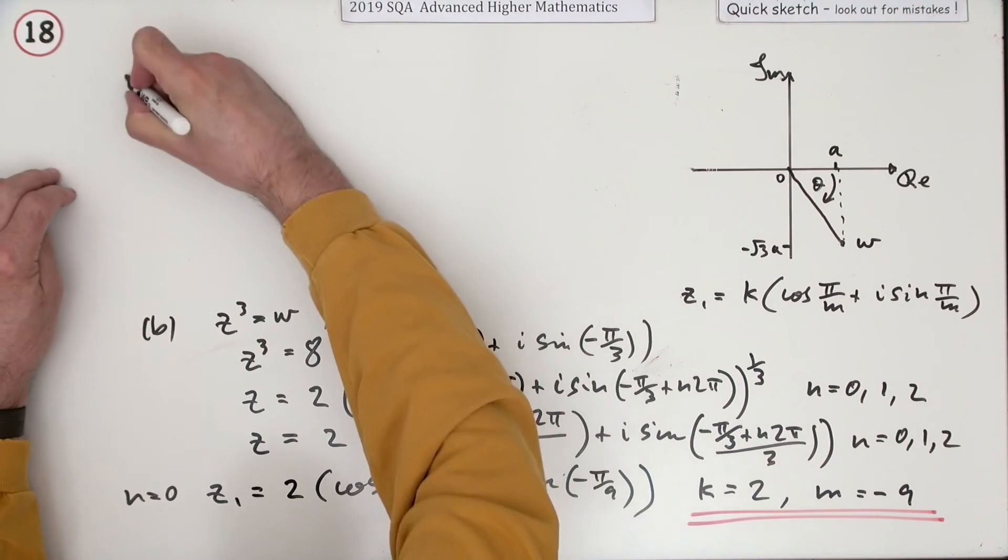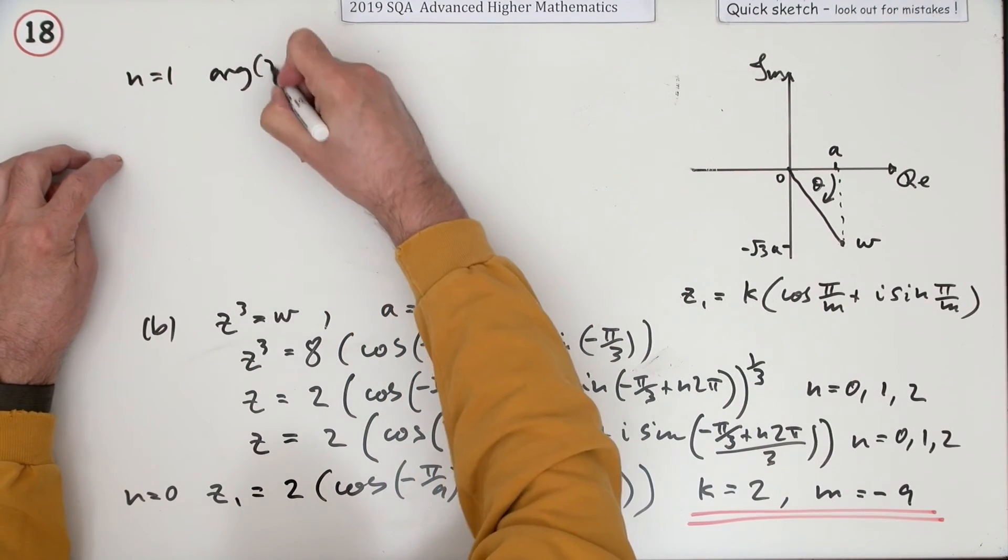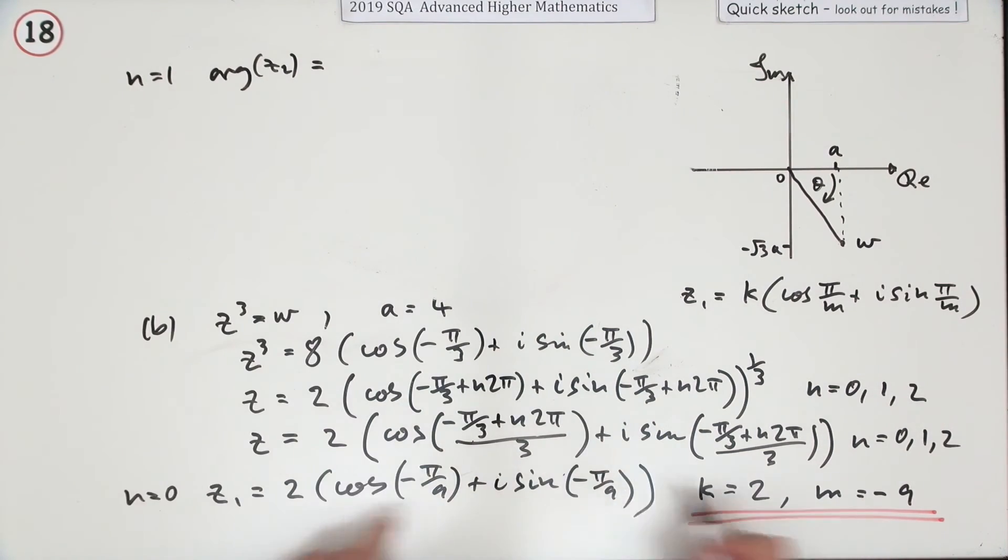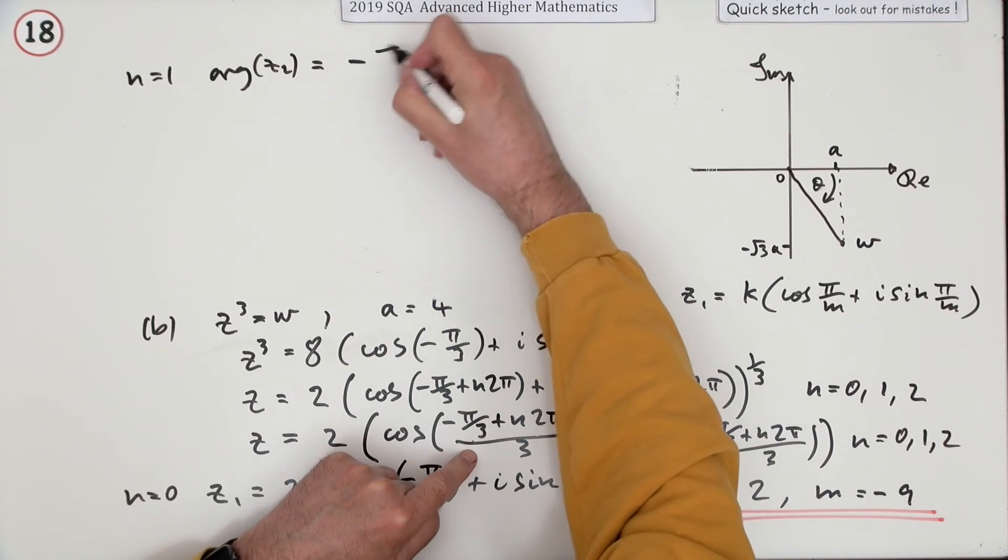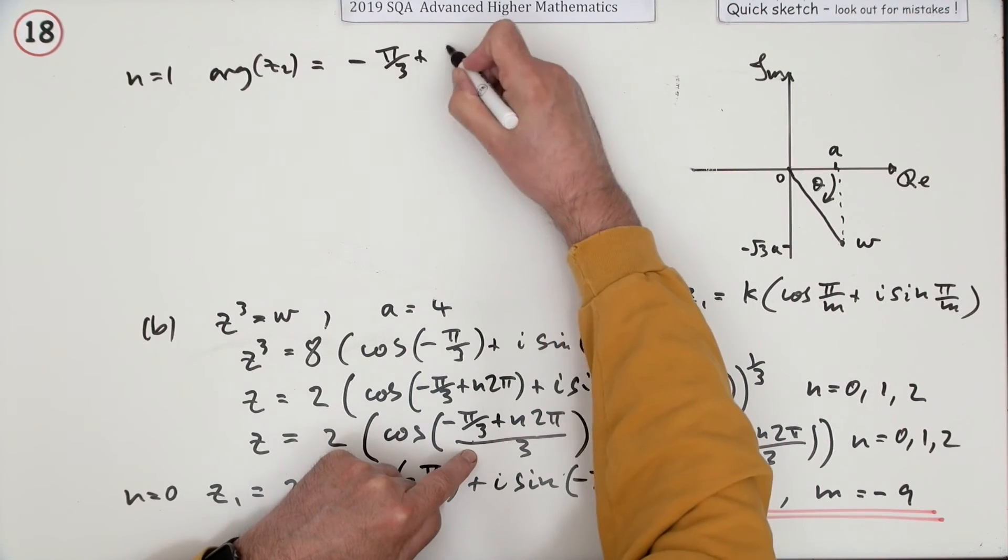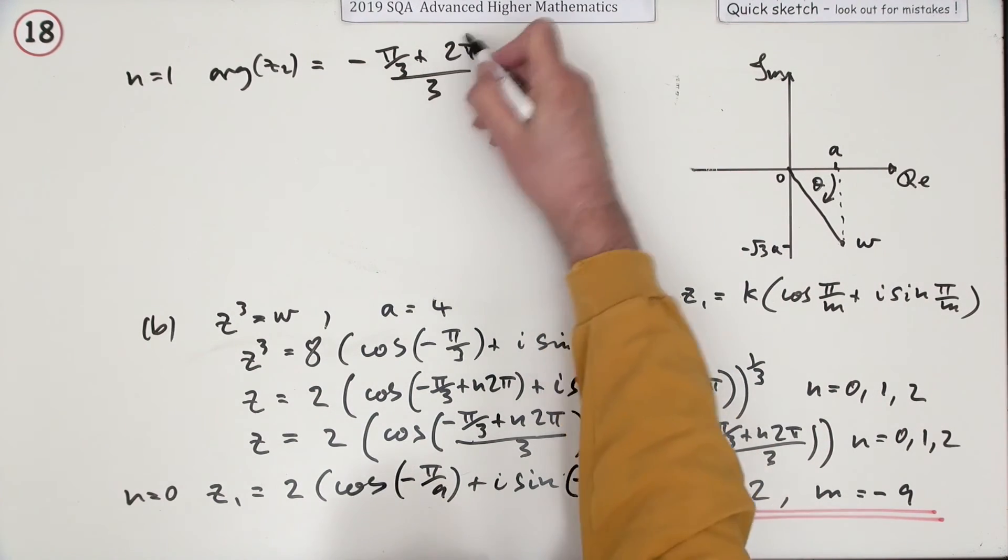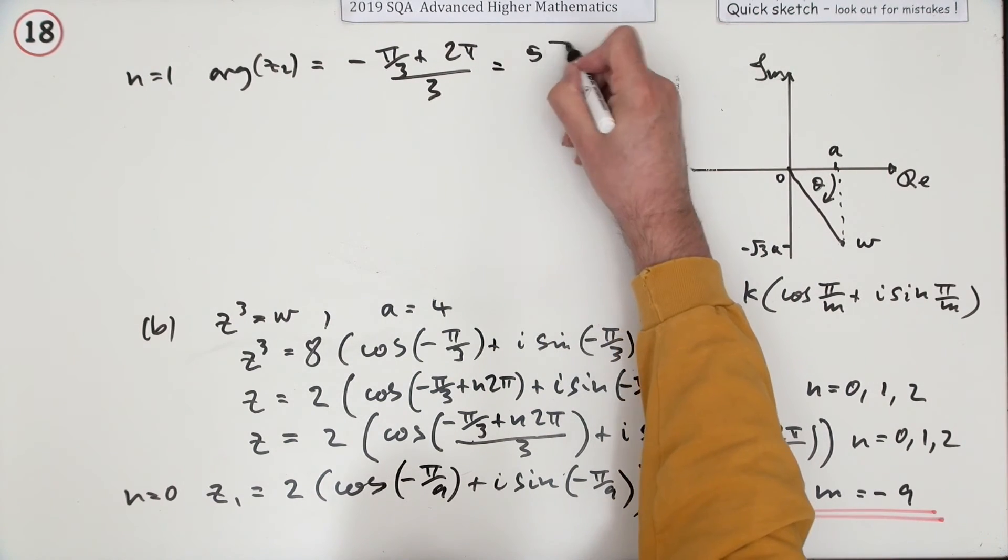I forgot to close that bracket. Now I'm just going to pop up here for the remaining ones. What happens when n is 1? I think I'm going to put it down this way. So the second root - I'm just going to find this argument to save writing all this out again. This argument is going to be negative pi upon 3 plus 2π divided by 3. So multiplying everything by 3, that gives you 6 take away 1 is 5π upon 9.